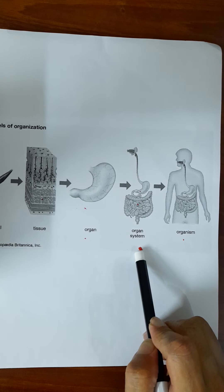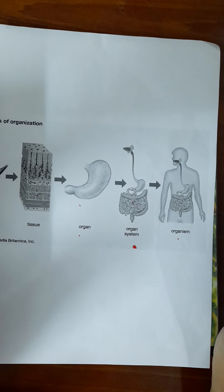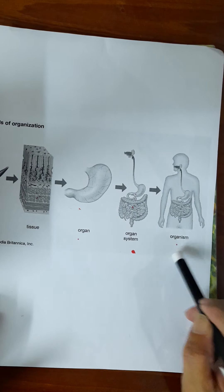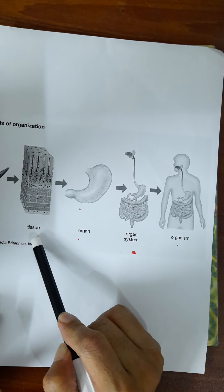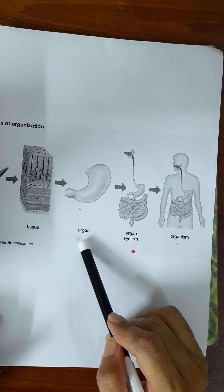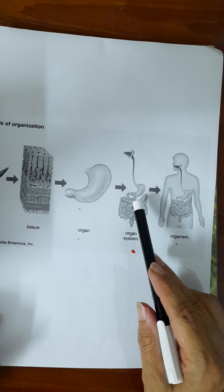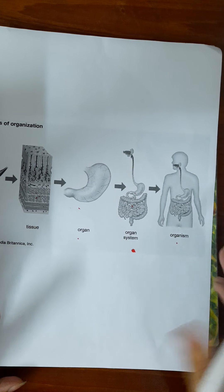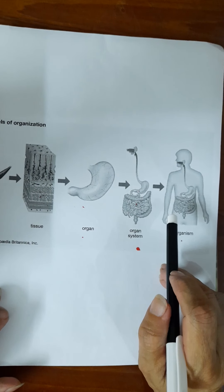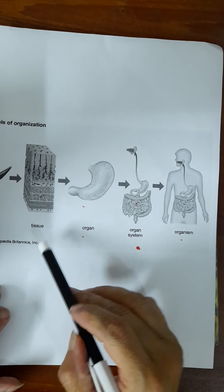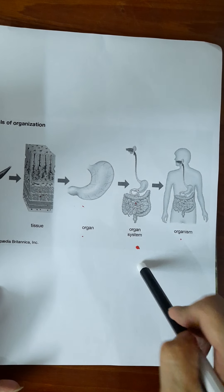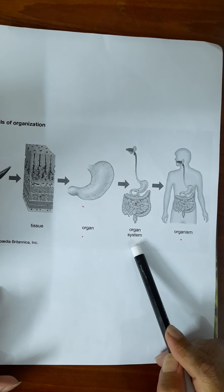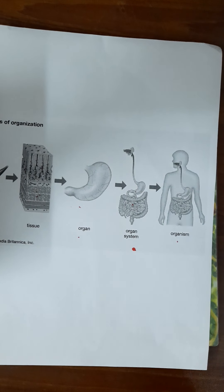When all these organ systems work in cooperation with each other in a specific body, that is called an organism. So: first come the cells, then similar cells combine to make a tissue, then different tissues with the same function form an organ, then different organs with the same function form an organ system, and then different systems combine to make an organism. These are the different levels of organization, and this type of sequencing was also in the homework.